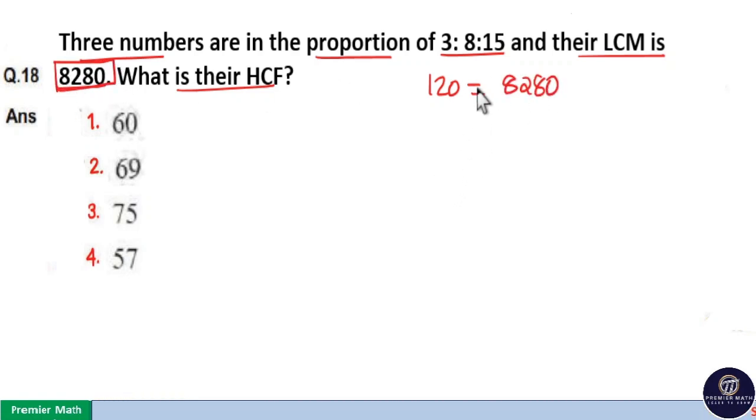8280 is the LCM. So, 120 part is equal to 8280 means 00 cancel. 12 goes 6 times in 72 remaining 10. So, 12 goes 9 times in 108.